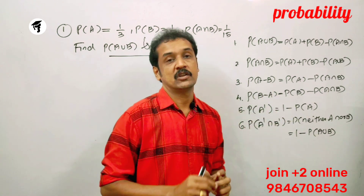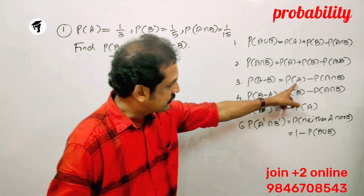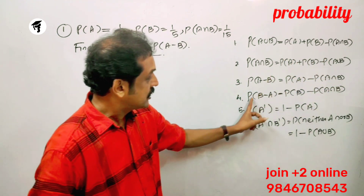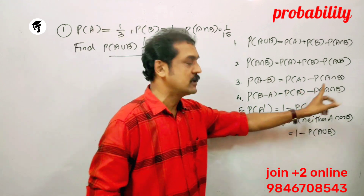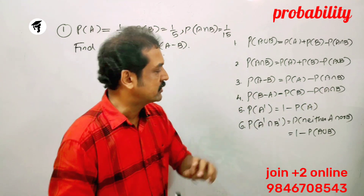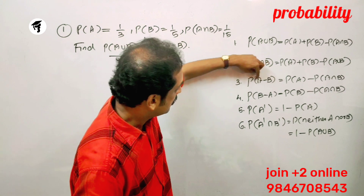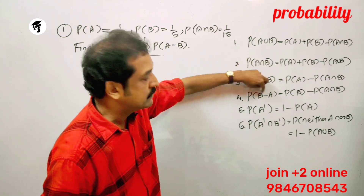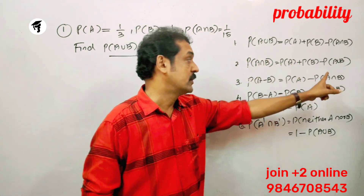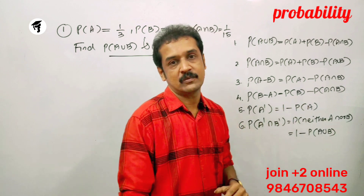P of A minus B equals P of A minus P of A intersection B. P of B minus A is P of B minus P of A intersection B. That is the clue. A minus B means elements in A but not in B.